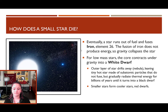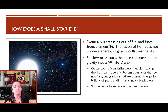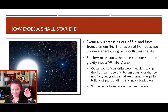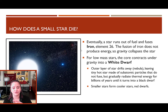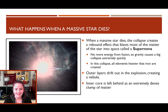Once that radiation slows down enough, we call it a black dwarf. You'll also hear about red dwarfs, which are formed from smaller, cooler stars and fall somewhere between white dwarfs and black dwarfs in terms of temperature.